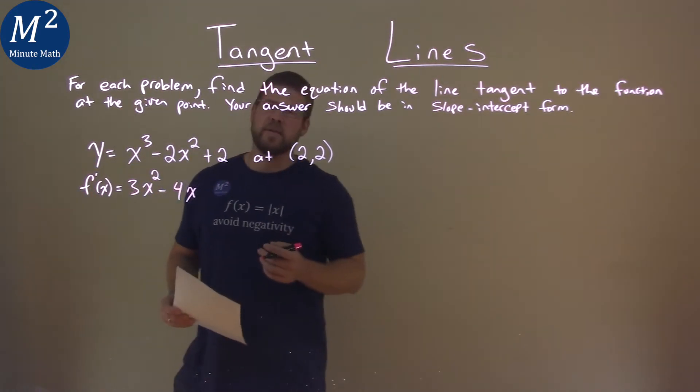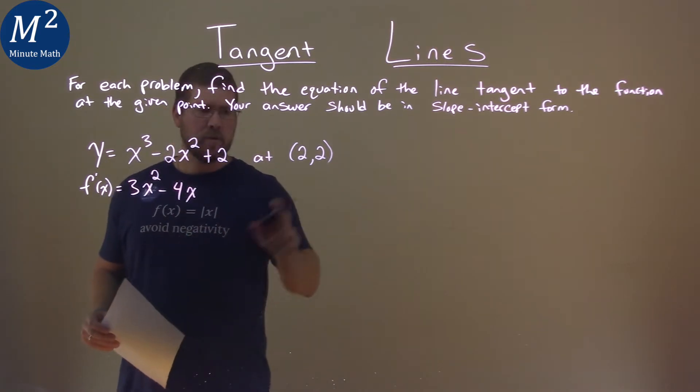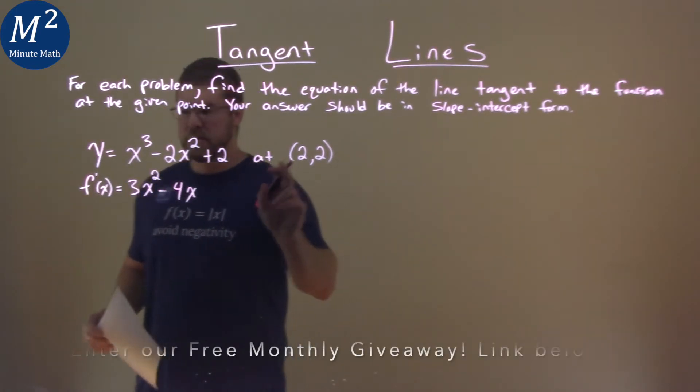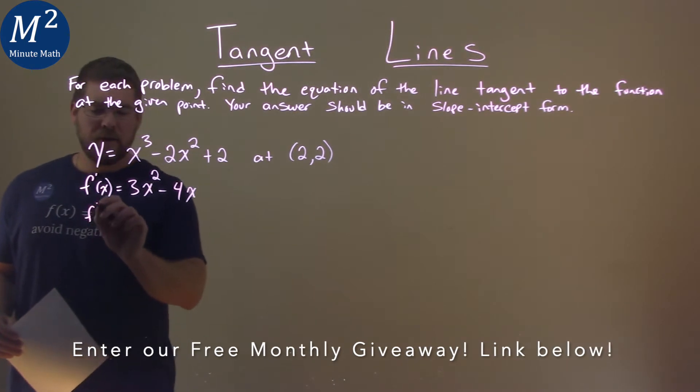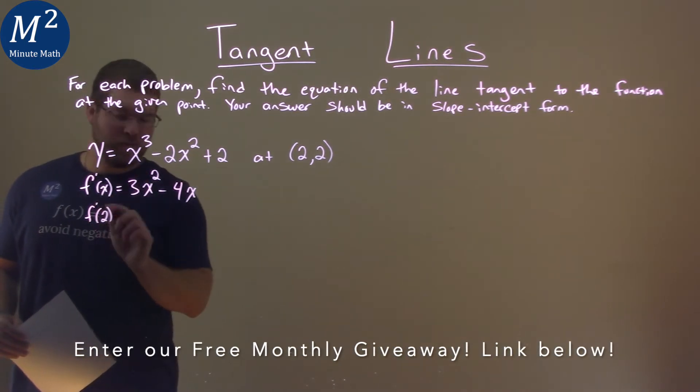So our derivative is pretty easy here to find, but we want to find the slope there. For the slope, we take our x value, which is 2, and plug it into f prime of x.